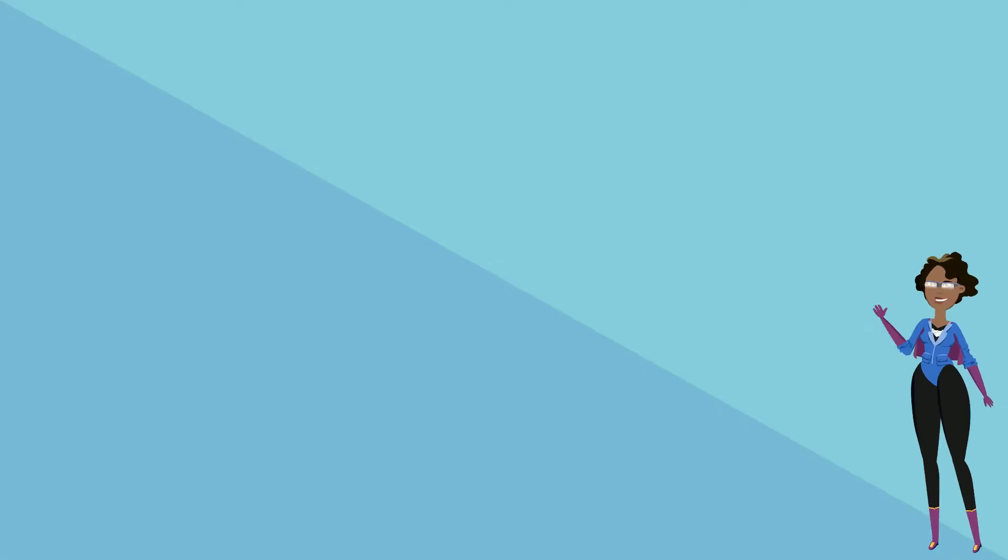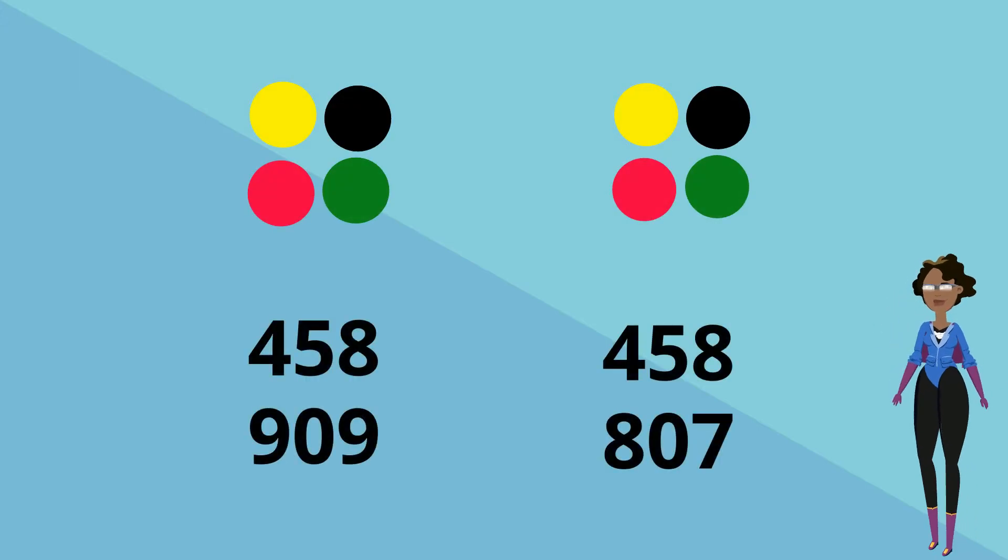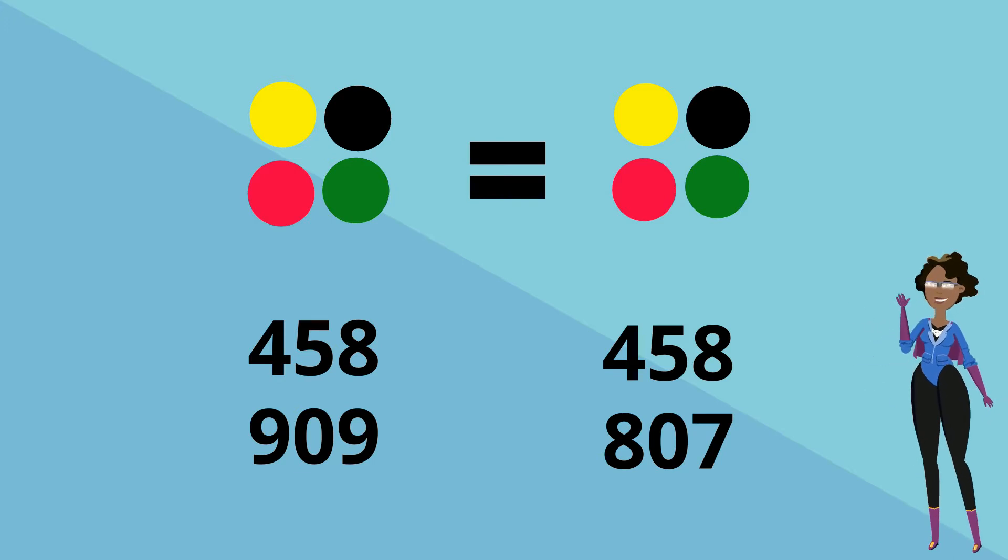A set is a collection or group of objects or numbers. When comparing two sets of things, they can either be equal, meaning having the same amount in both, or unequal, meaning having different amounts in either.